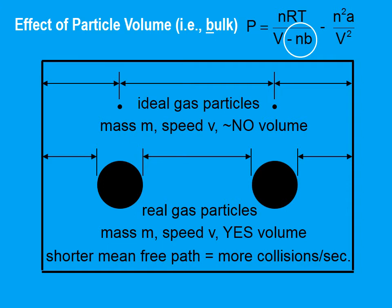Which means that real gas particles have a slightly shorter mean free path, and that means that, on average, there are going to be more collisions per second. And if there are more collisions per second, I think that's going to mean a higher pressure. And if you look at the upper right, notice that if you have this term that is subtracted in the denominator, you're going to get a higher pressure than what the ideal gas law would predict.